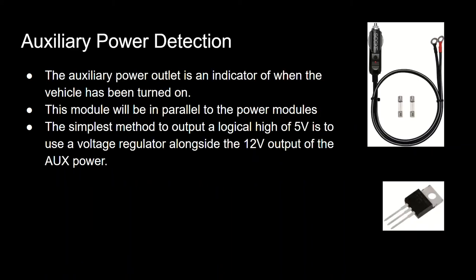Auxiliary power detection: the auxiliary power outlet is an indicator of when the vehicle has been turned on. This module will be in parallel to the power modules. The simplest method to output a logic high of 5V is to use a voltage regulator alongside the 12V output of the auxiliary power.